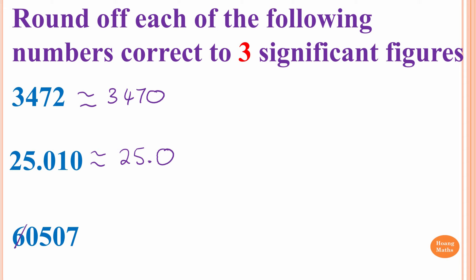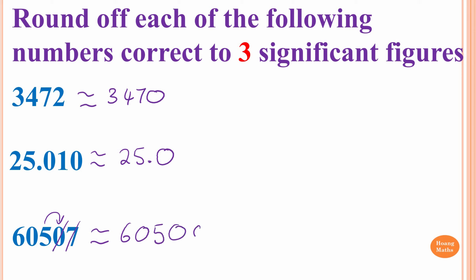We have 1, 2, 3, 4, 5 significant figures. We round to 3: digits 6, 0, 5. Before writing 605, we check the number after 5, which is 0 — less than 5, so we round down. The answer is 605 followed by zeros, giving 60,500. The trailing zeros in a whole number are not significant, so this is 3 significant figures.